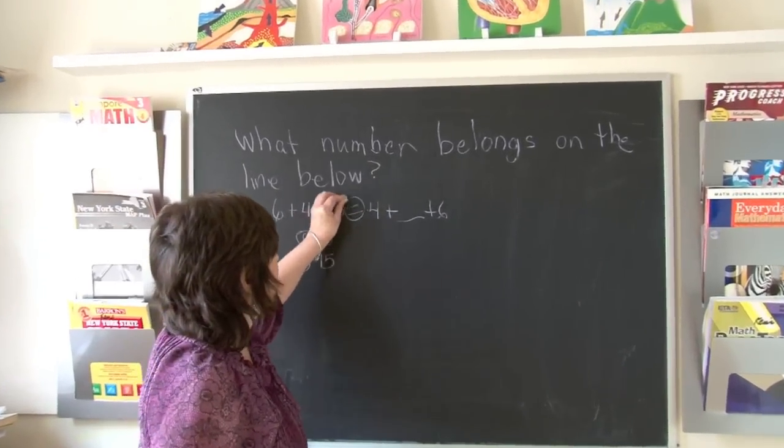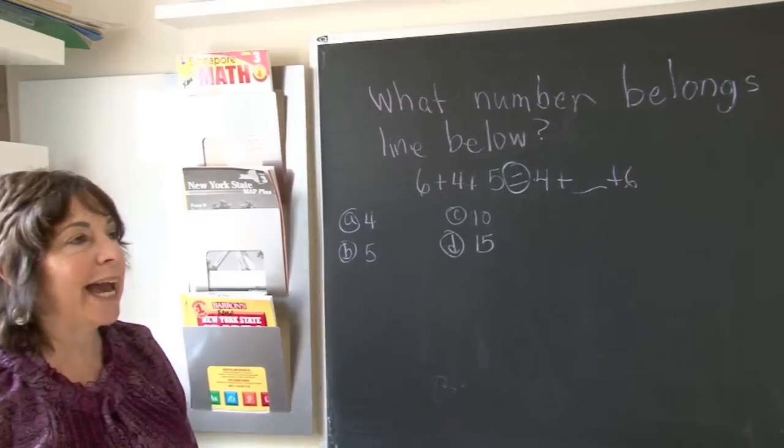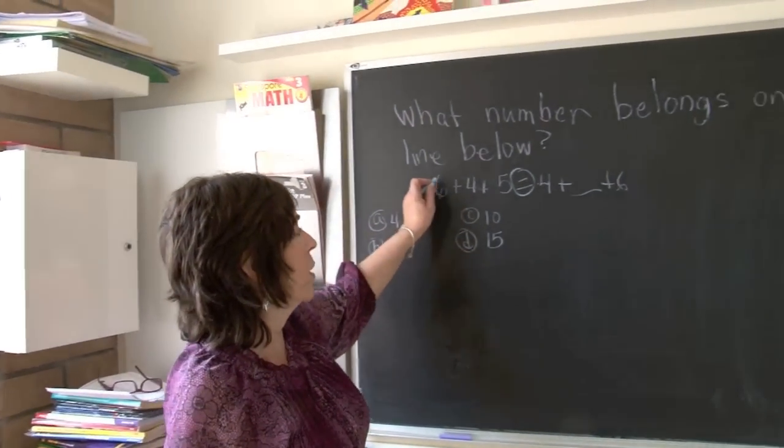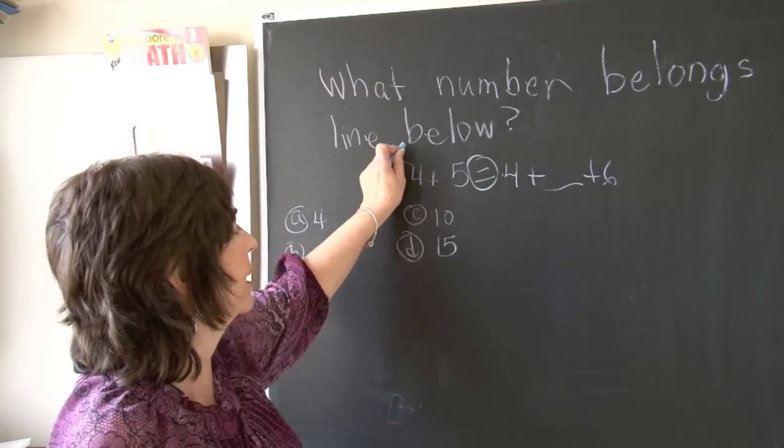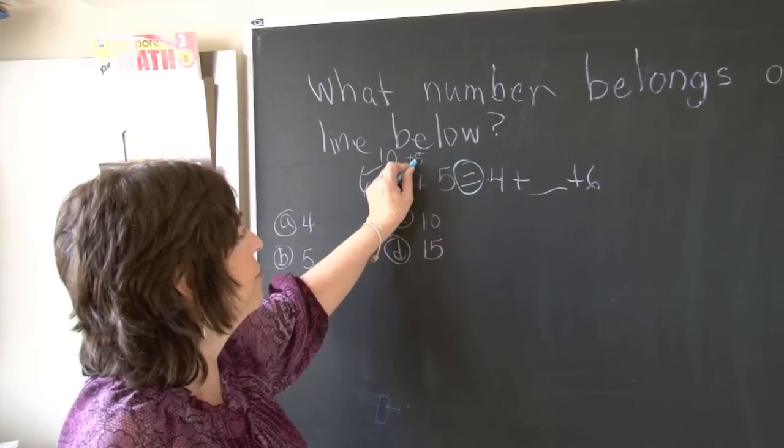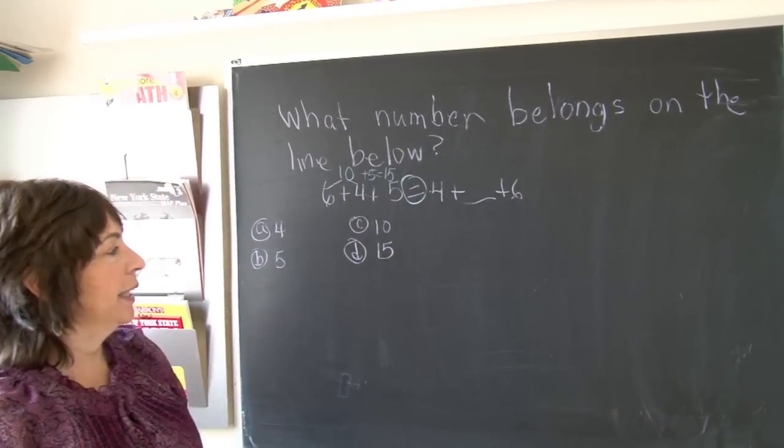This is an equal sign. Equal means both sides must have the same total. So if we add 6+4, that's easy because it's a combination of 10. Now we have 10+5 and that's 15. An equal sign means it must be the same on each side.